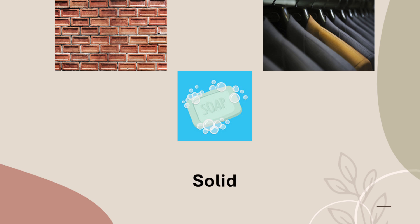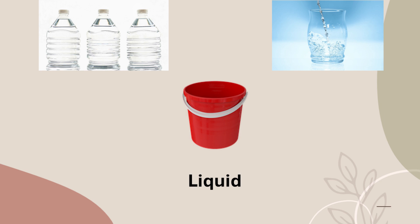We cannot change the shape of a solid, but we can change it to an extent in some cases — like a sponge when it is pressed.